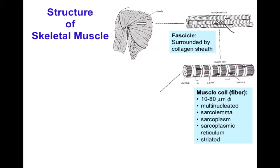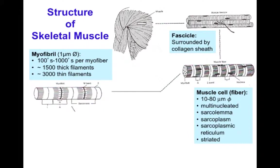The prefixes 'myo' and 'sarco' are often used in muscle terminology. The plasma lemma of the myocyte is called the sarcolemma, the cytoplasm is called the sarcoplasm, and there's a specialized endoplasmic reticulum called the sarcoplasmic reticulum. Even at the level of fascicles and the single fiber, the cells are visibly striated — striped — with a repeating period of approximately two micrometers of light and dark bands. Inside the muscle fiber are lots of myofibrils, hundreds or thousands, each about one micrometer in diameter, made up of overlapping arrays of thick myosin filaments and thin actin filaments.